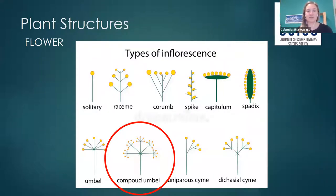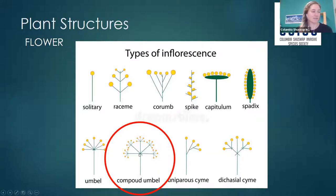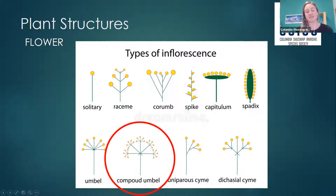A compound umbel is the most distinctive pattern of the Apiaceae family. All of the stems radiate from a cluster at the tip of the stem to a secondary umbel — that's why it's called a compound umbel.